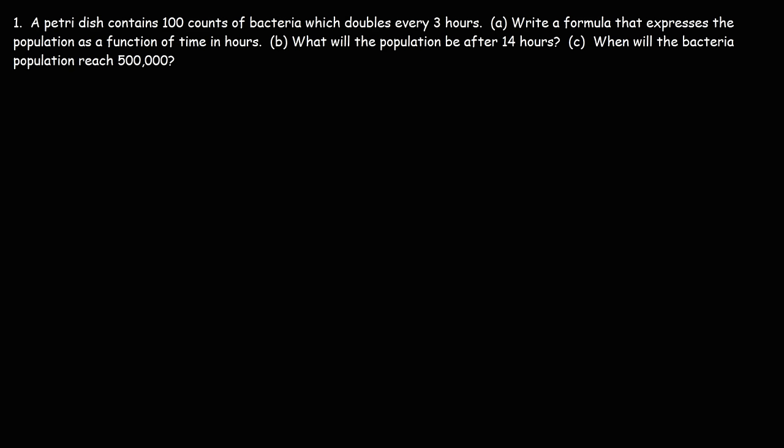In this video, we're going to focus on math problems associated with bacterial growth. Let's start with this one. A petri dish contains 100 counts of bacteria, which doubles every 3 hours. Part A: write a formula that expresses the population as a function of time in hours.